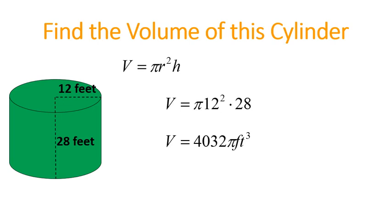The volume is 4032 pi cubic feet. Now nobody ever talks that way, so we're going to plug in 3.14 as our approximate value of pi. So 4032 times 3.14 gives us an approximate volume of 12,660.48 cubic feet.